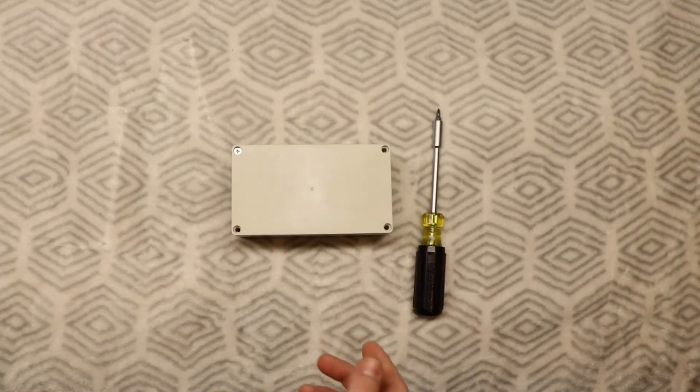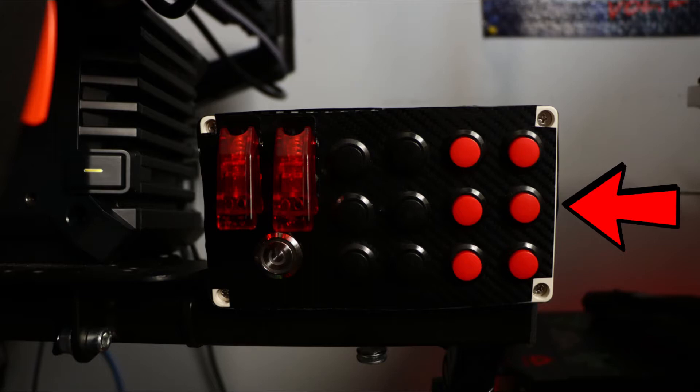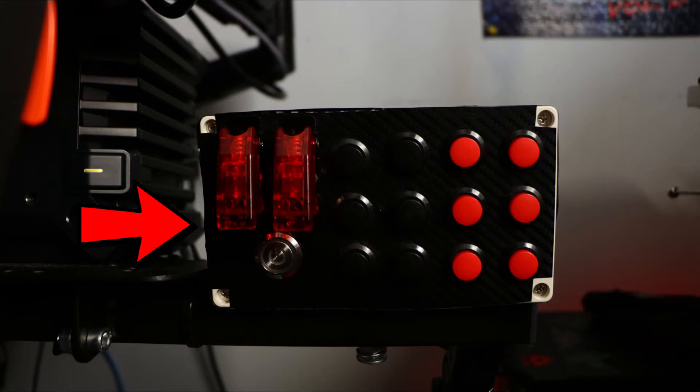The parts that you will need to make this button box are in the link in the description below. The first thing that you will need are the buttons. We decided to use 12 16mm buttons on the right of the box and two momentary toggle switches along with one 19mm 5V light up self-reset power switch on the left.